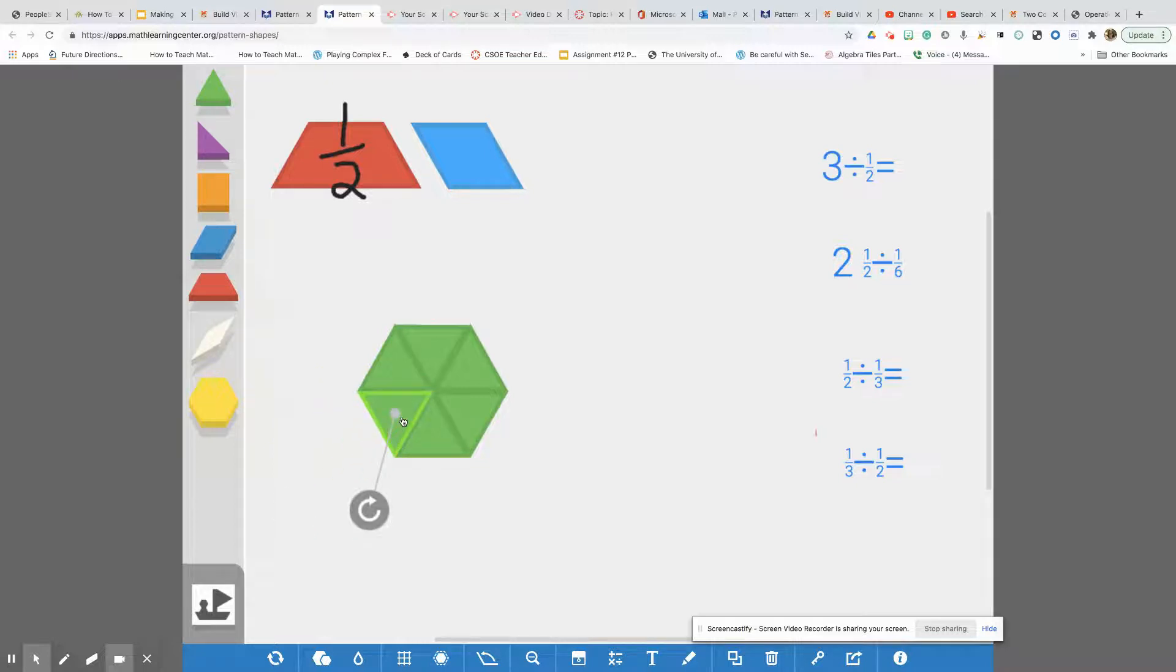So our denominator is going to be a six. So each green triangle will be one sixth. Okay. So that is a six. And this is a third. Okay. So we've identified some fractions in relation to our whole unit. So let's try to work on some problems.